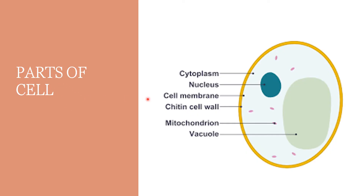Parts of a cell: A cell has cytoplasm — it is a jelly-like substance which is bound by a cell membrane. The cell membrane is selectively permeable; it can allow certain substances to pass but does not allow other substances to go out of the cell.